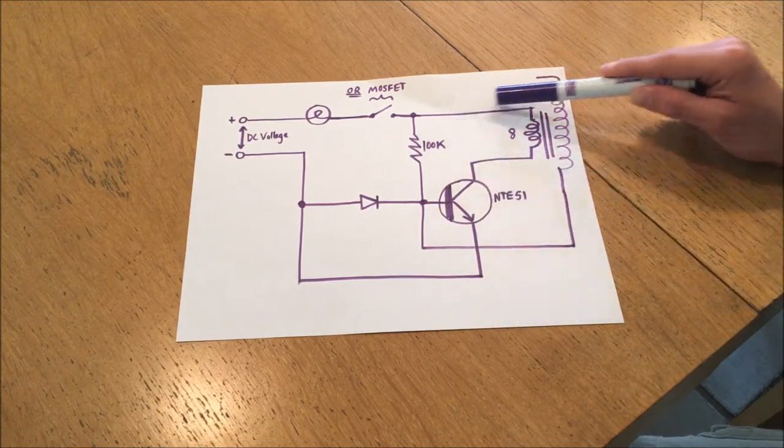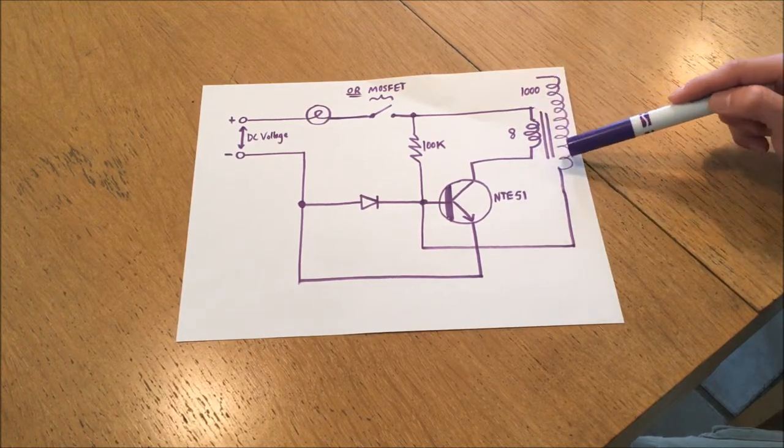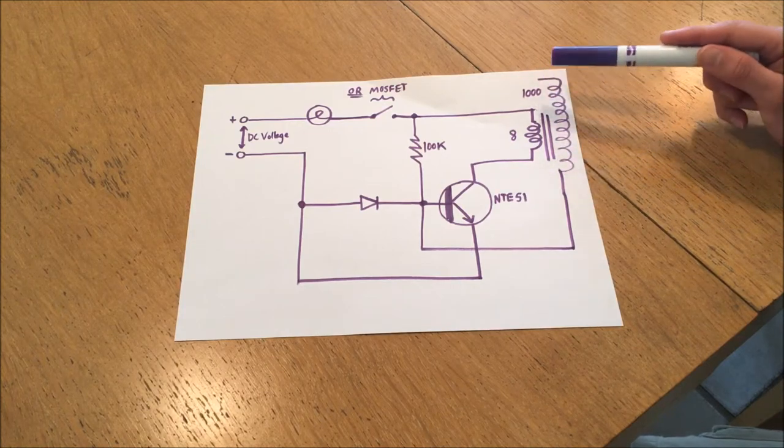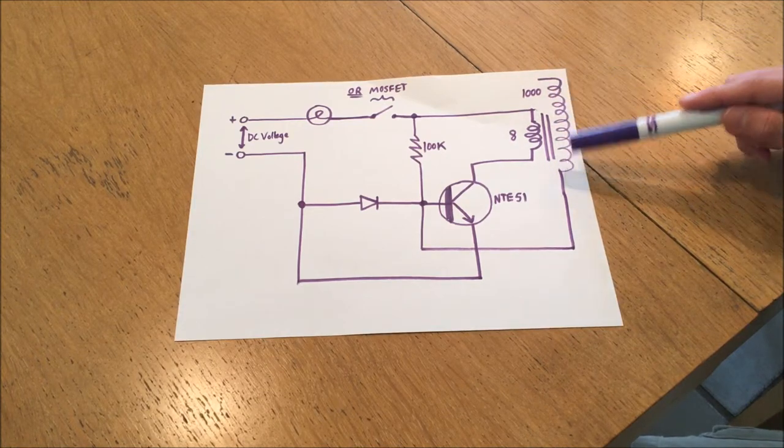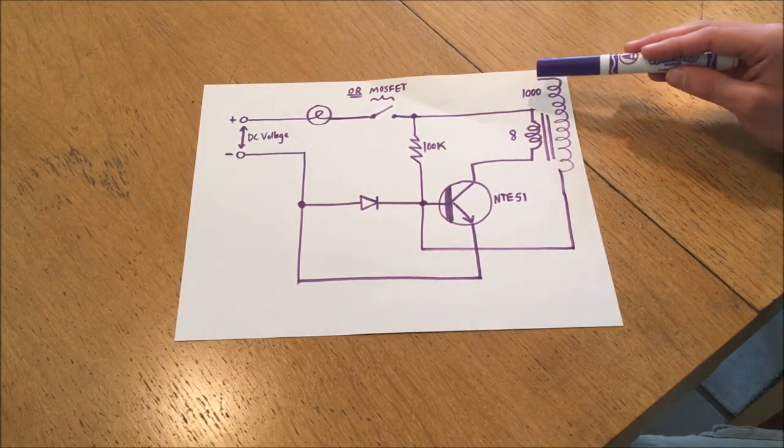This allows a huge burst of current to suddenly start flowing through these 8 turns of wire. And in response, another burst of current flows through these roughly 500 to 1,000 turns on the secondary. You might wonder, well, this is not connected to anything. What's going on here?